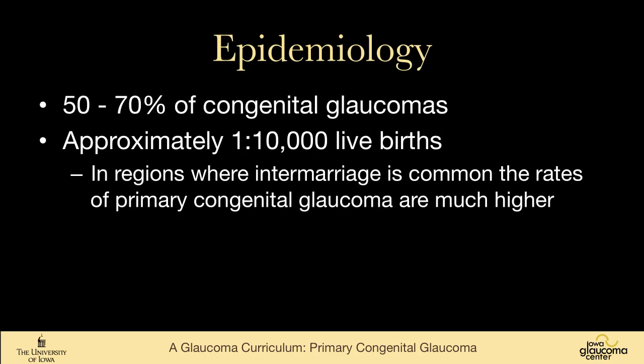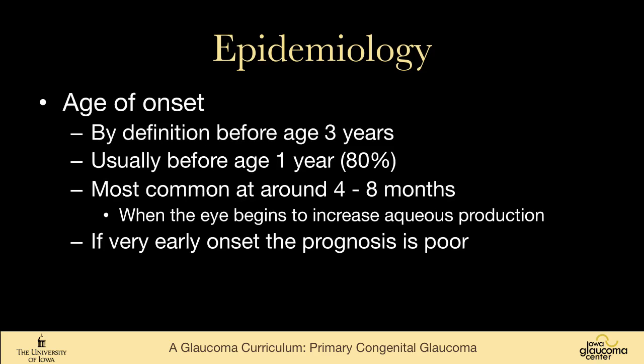Primary congenital glaucoma represents the majority of congenital glaucoma, somewhere 50 to 70 percent. About one in 10,000 births has primary congenital glaucoma. In populations where intermarriage is common, rates are much higher — rates in gypsies are very high, and in certain other countries where people have a smaller gene pool. By definition, the disease is glaucoma in someone before the age of three. After three, the eye does not grow much in response to intraocular pressure. It typically occurs before the age of one, most commonly in kids between four and eight months of age, when they start to increase aqueous production to be more like an adult.